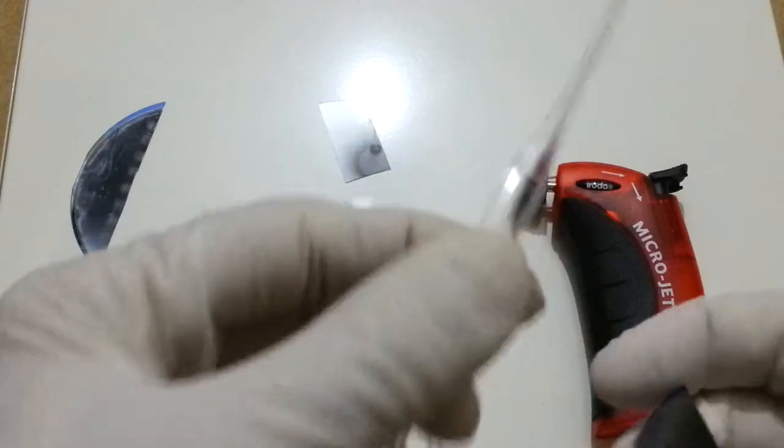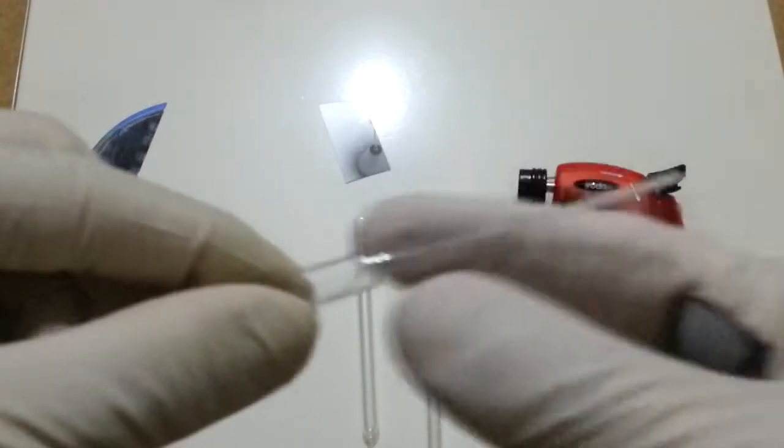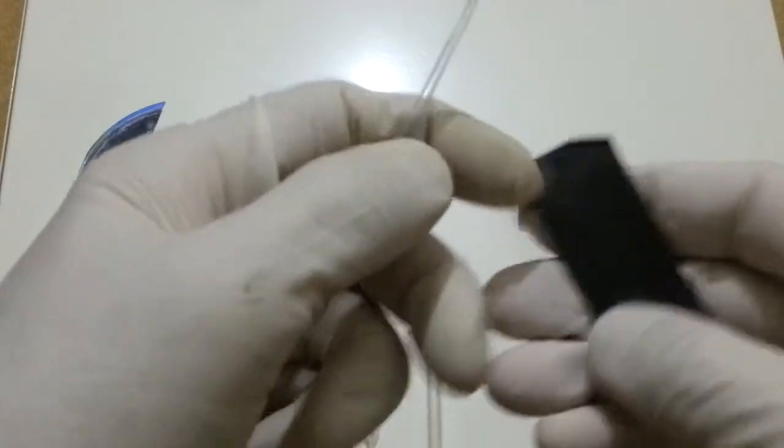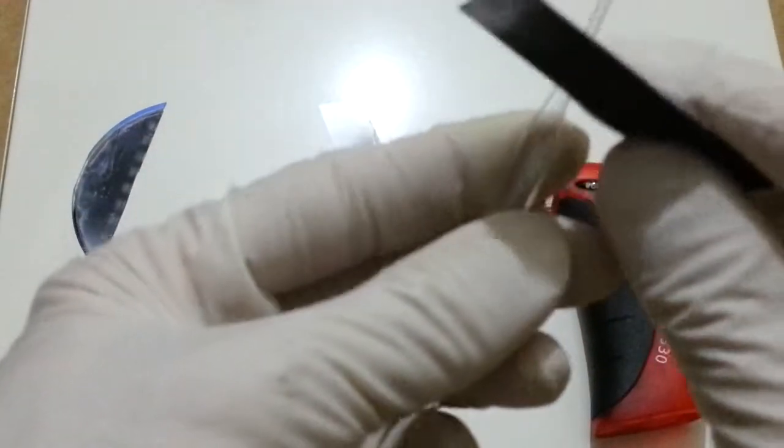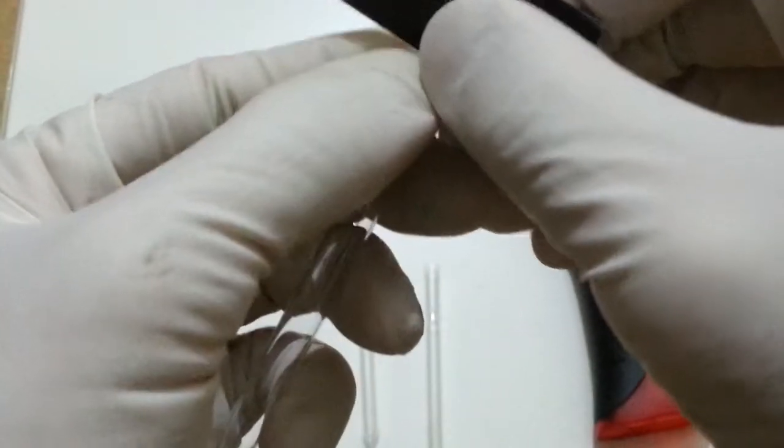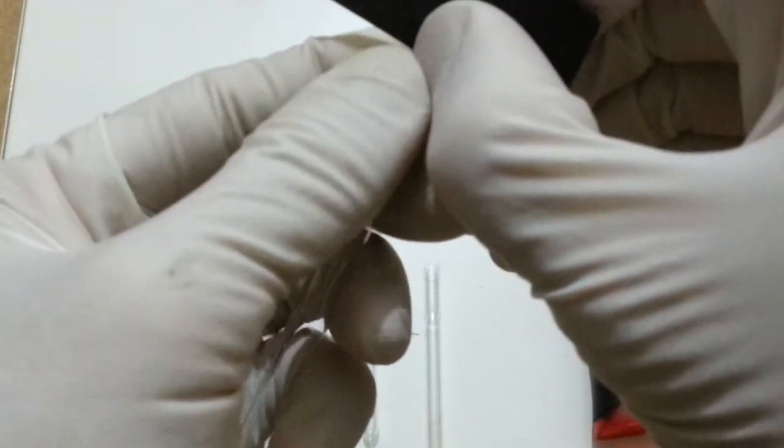Alright, so let's start by making a little scratch because we want this tail of the Pasteur pipette. So we are going to make a scratch here. Doesn't have to go all around.